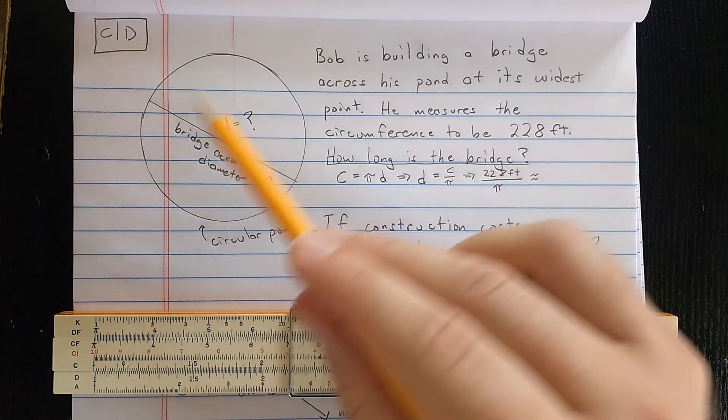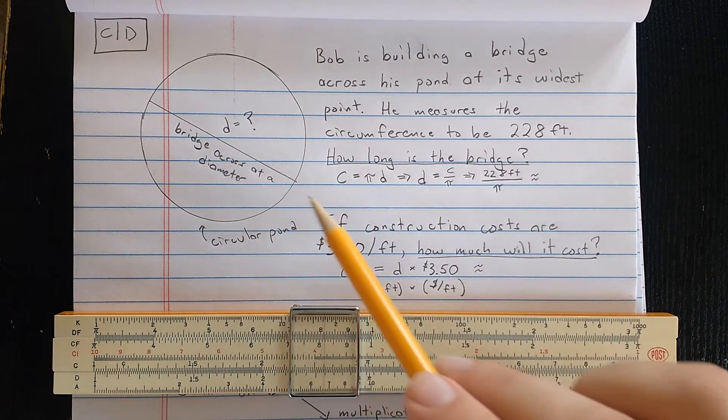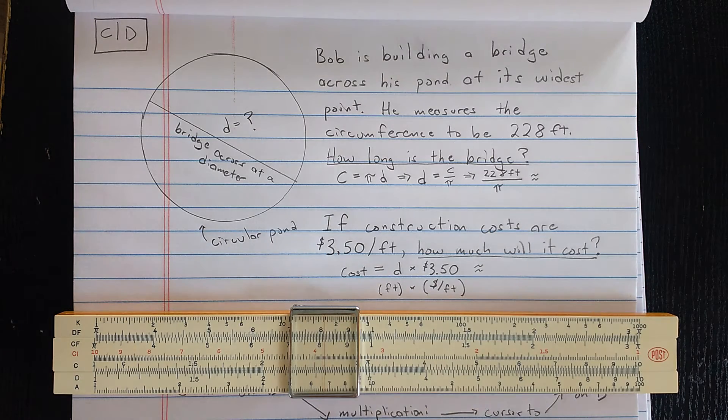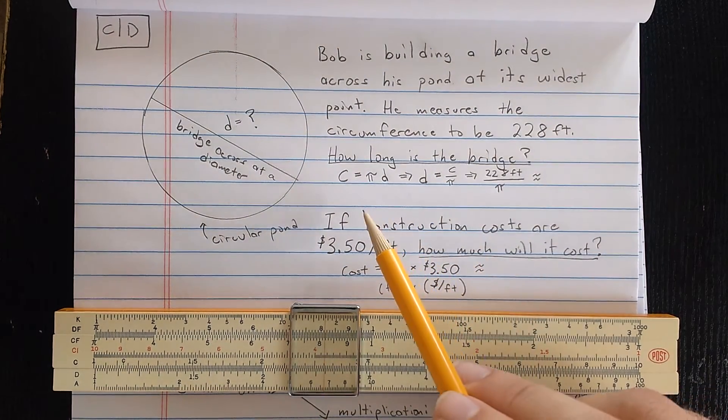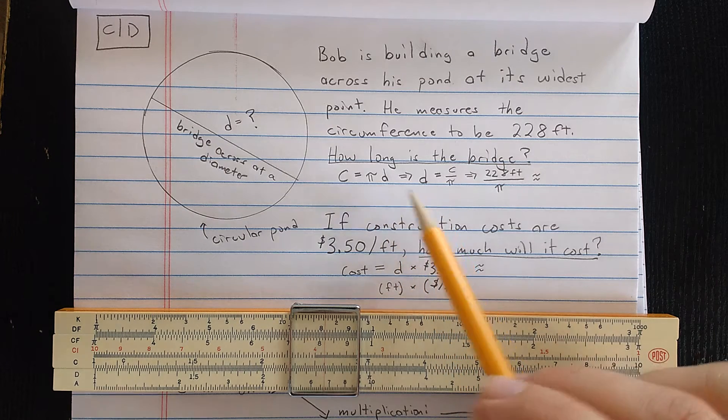Okay, so here we have Bob's pond. He will have a bridge going across the diameter, and his pond is circular. So the first thing we need to do is compute the diameter of the pond.